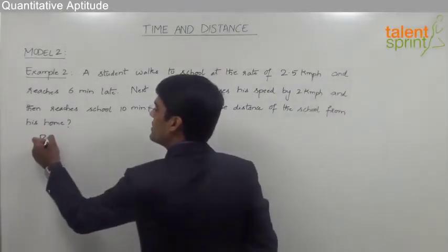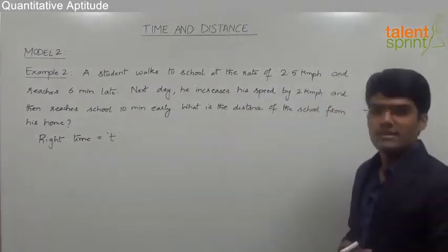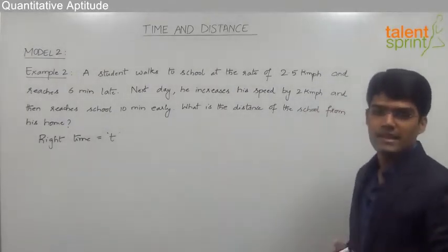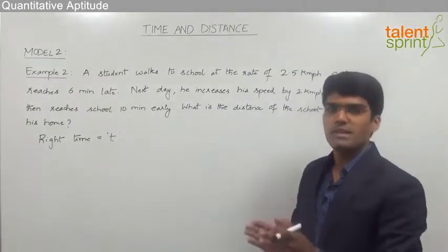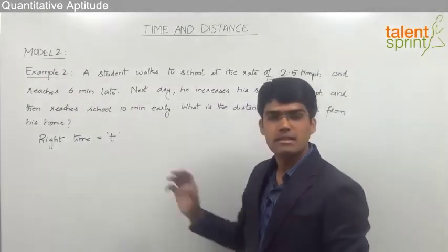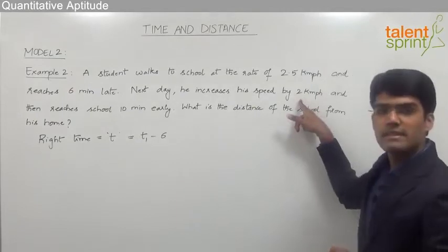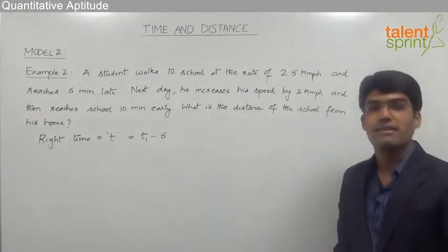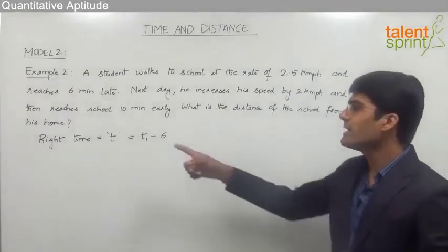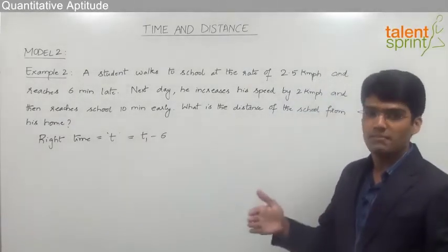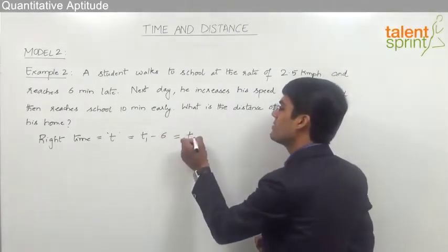Let us assume the right time to reach the school is t. The time taken in the first case is t1 and in the second case is t2. In the first case he reached six minutes late, so t equals t1 minus 6. In the second case, he reaches 10 minutes early, meaning if we add 10 minutes to t2 we get the right time t. So t equals t2 plus 10.